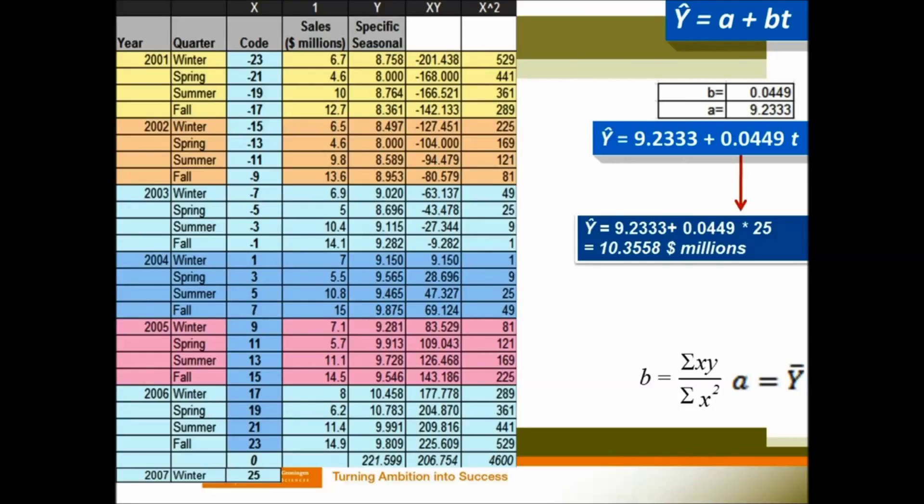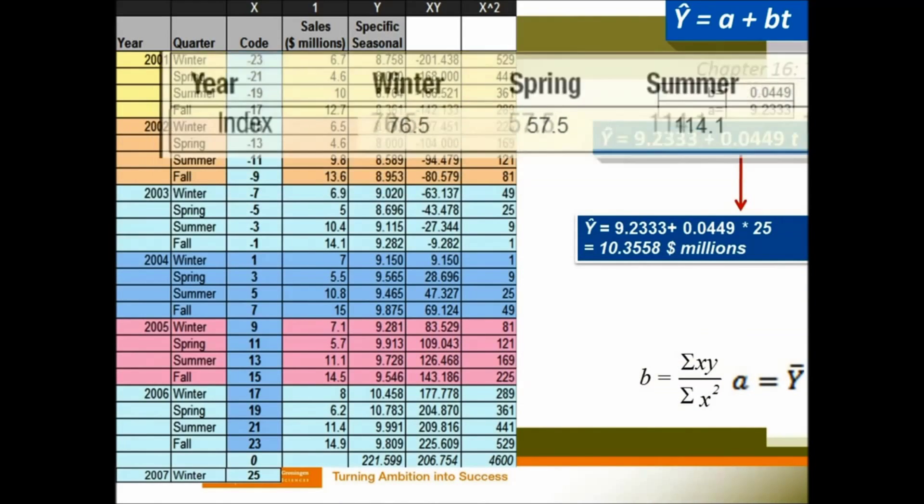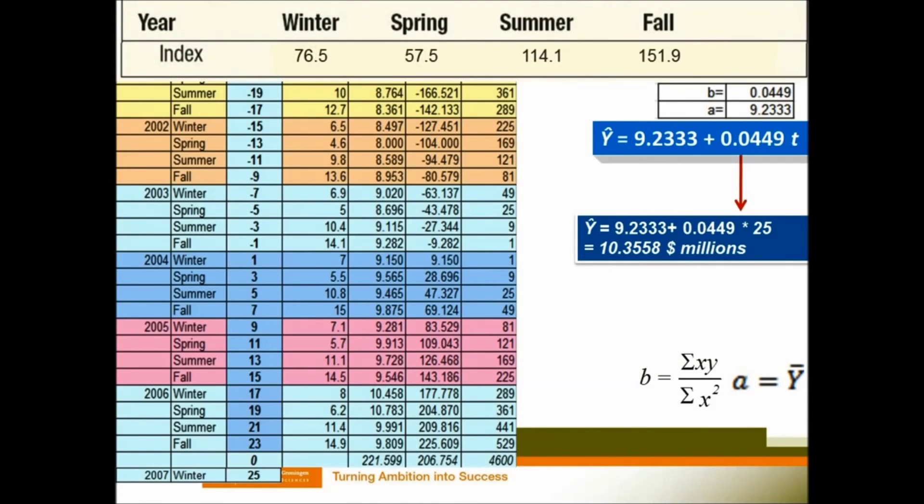But this is based on a trend line, a linear relationship. So 10.36 is actually a quarter average for 2007. But what about your winter sales? You need to be more precise. Then you need to combine the seasonal index into your calculation.